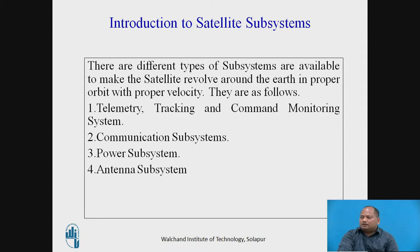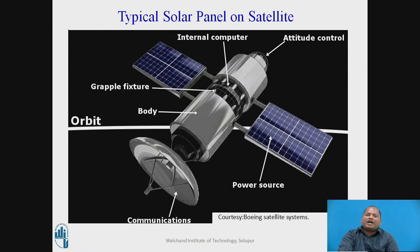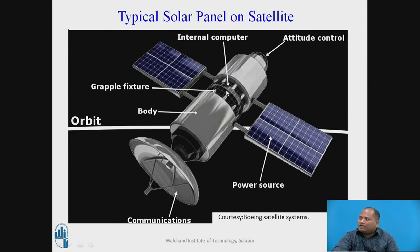The subsystems are as follows: telemetry, tracking, command and monitoring system; second, communication subsystems; third, power subsystem; and fourth, antenna subsystems. Now let us look at a typical satellite which has power subsystems on it. You can see the power subsystems — they are the power sources, which include the solar panels. You can also see the communications subsystem, that is the antenna, and the attitude control subsystem present on the satellite.